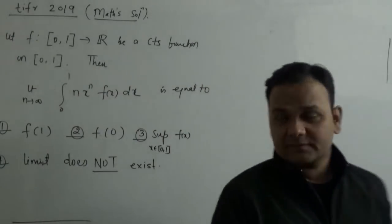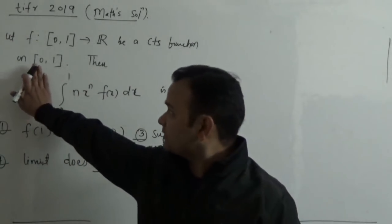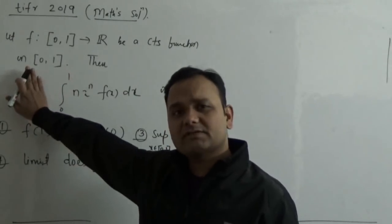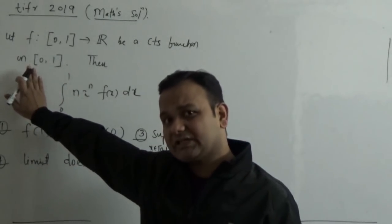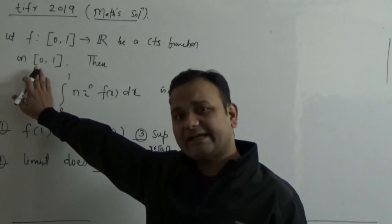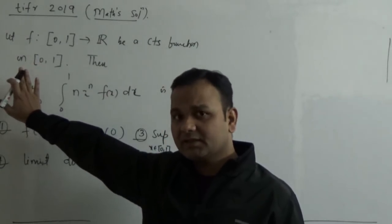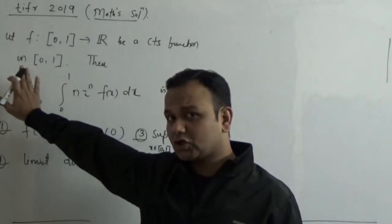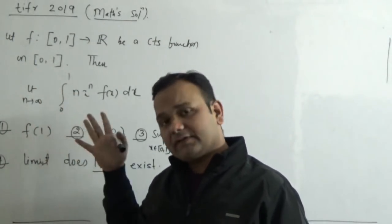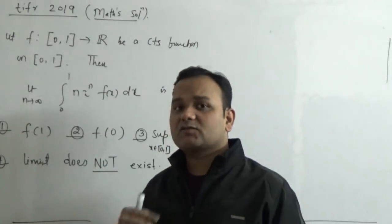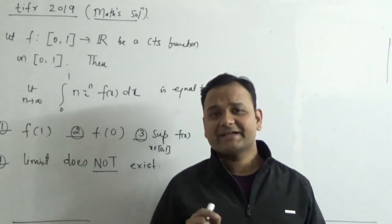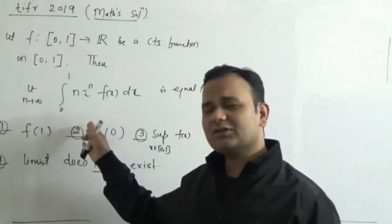I am not here to just give the answer — I am here to make you comfortable in mathematics. For each N you are having a real number, hence this is a sequence. And for any sequence we can talk about the limit: what is the limit, if it converges, where it will go, and if it does not converge, then the limit doesn't exist. That is what you have to prove. It is a very basic, elementary question.